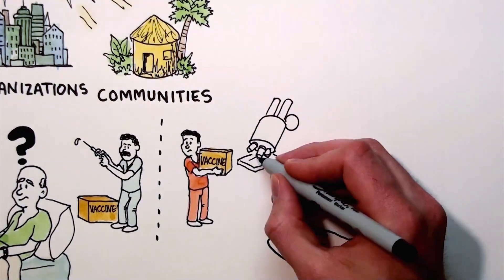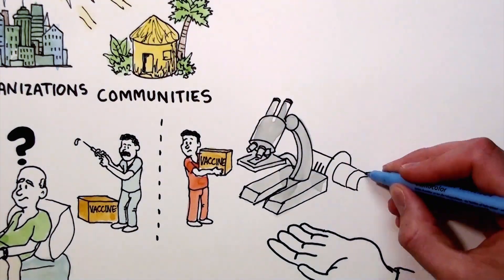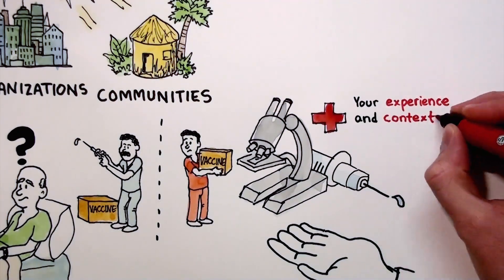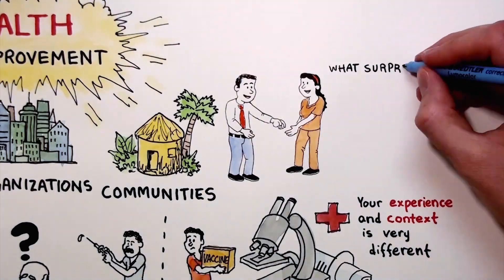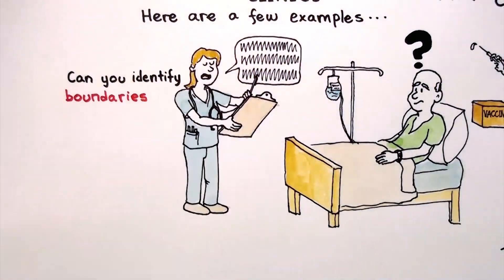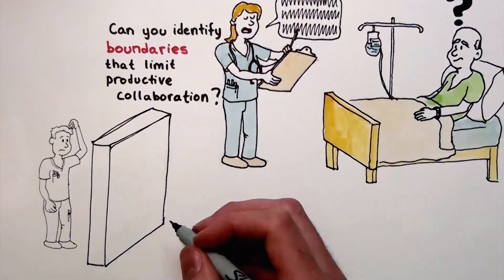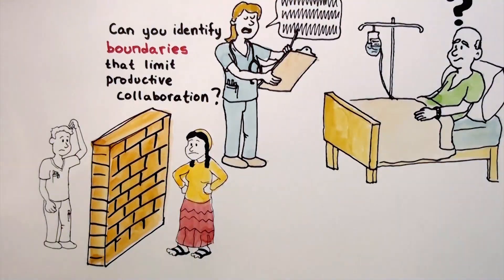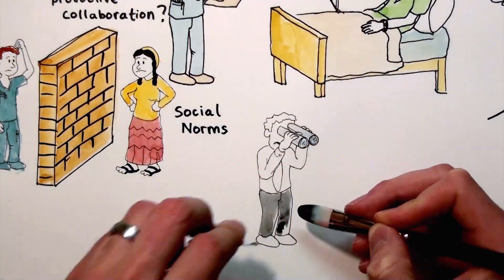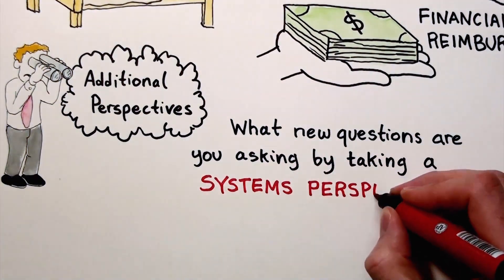Complex systems thinking can be applied to a wide range of health activities. Your experience and context is likely very different from ours. What surprising patterns of interaction might you notice by applying a systems perspective in your sphere of influence? Can you identify boundaries that limit productive collaboration, such as social norms that limit communication between organizations or cultures? What additional perspectives need to be considered to reach your community's health vision? What new questions are you asking by taking a systems perspective?